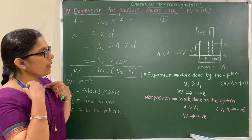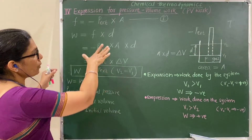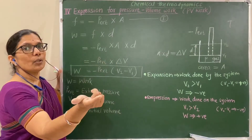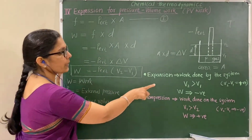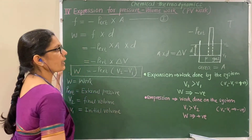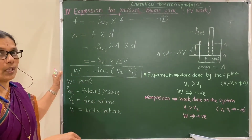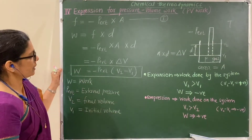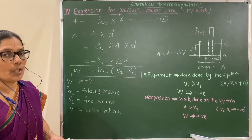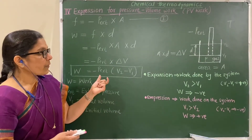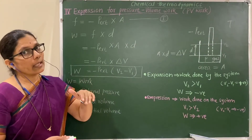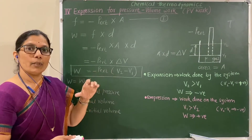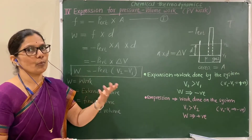When a derivation is asked, write only the derivation part. Do not write the sign convention discussion — that is useful for solving numericals. If a question specifically asks when work is positive and negative, then you have to mention those terms. Now, let us consider free expansion, and then we will solve numericals based on this formula. I will give you tips and tricks to solve the numericals.